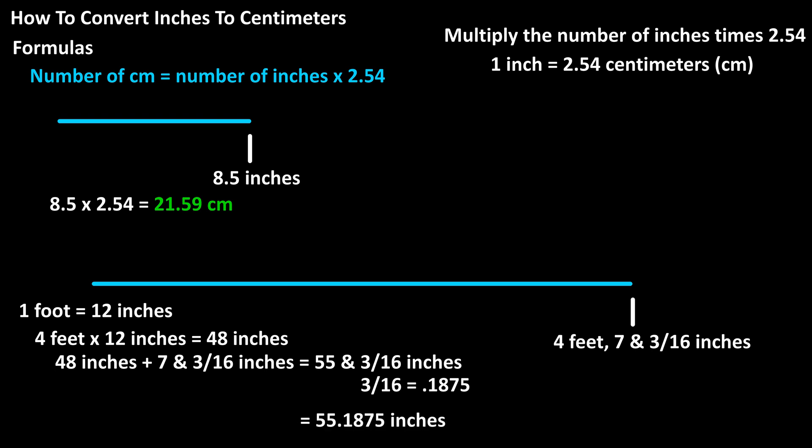Now, we multiply by 2.54. 55.1875 times 2.54, which calculates to 140.18 rounded off. So, 4 feet and 7 3/16 inches equals 140.18 centimeters.